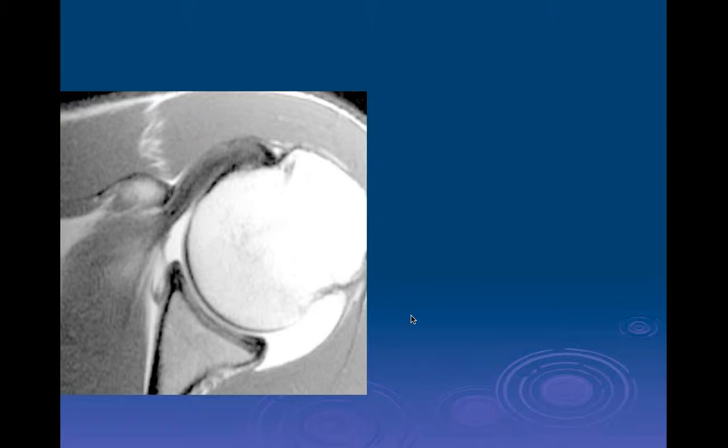A better way to evaluate this is on the axial plane. Several studies have looked at the interspace between the lesser tuberosity and the coracoid process. A study done at Kerlan-Jobe shows that if this space is 8 millimeters or less, you have increased risk for symptoms of anterior impingement.